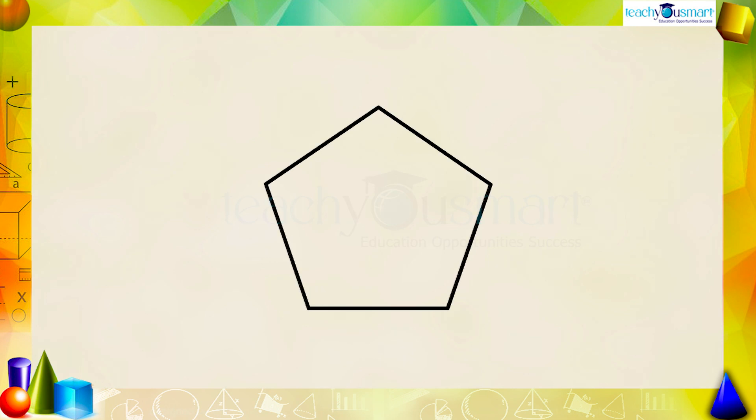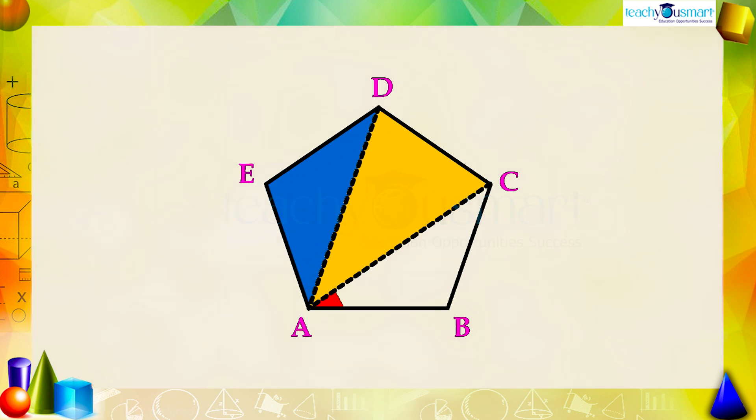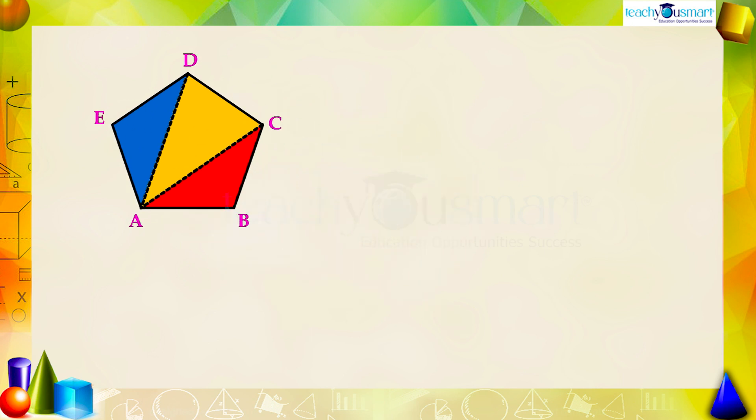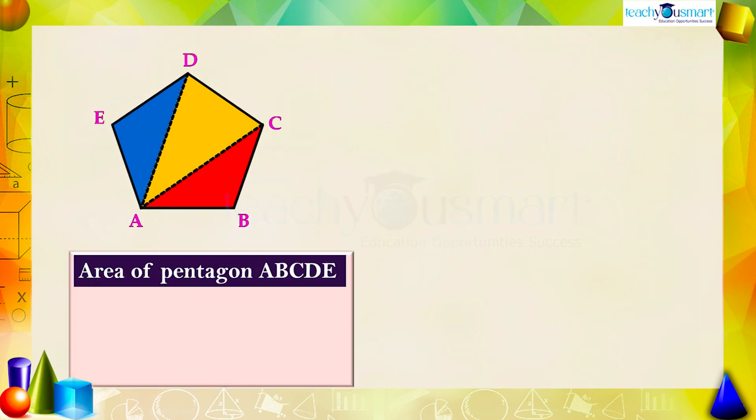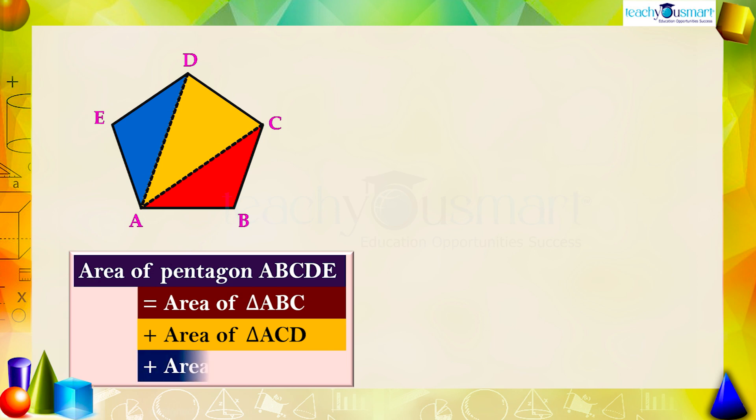Consider the pentagon ABCDE. If we draw two diagonals AC and AD, we get three triangles: triangle ABC, triangle ACD, and triangle ADE. Now we can find the area of the pentagon by adding the area of these three triangles. That is, the area of pentagon ABCDE equals area of triangle ABC plus area of triangle ACD plus area of triangle ADE.